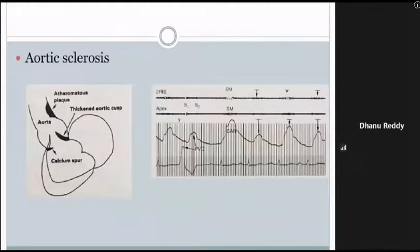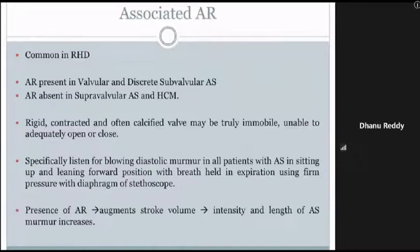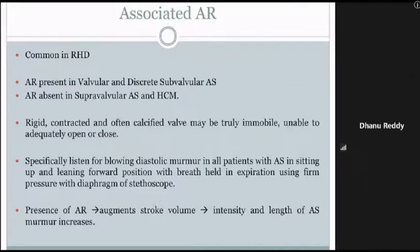Aortic sclerosis may cause a short ejection systolic murmur due to a calcium spur, thickened aortic cusp, or atheromatous block in the ascending aorta, and follows the same post-PVC rule. Associated aortic regurgitation is common in rheumatic heart disease and is present in valvular and discrete subvalvular aortic stenosis, but absent in supravalvular aortic stenosis and HCM. The rigid, contracted, often calcified valve may cause aortic regurgitation. Listen specifically for a blowing diastolic murmur in all patients with aortic stenosis — patient sitting up and leaning forward, breath held in expiration, using firm diaphragm pressure.